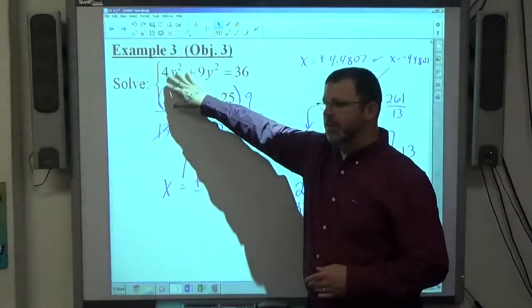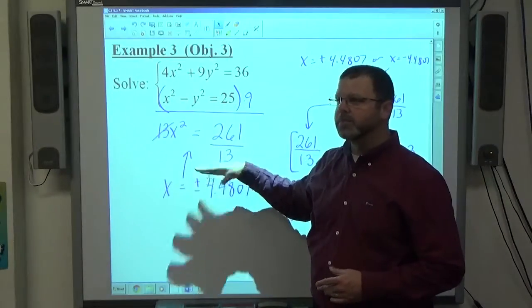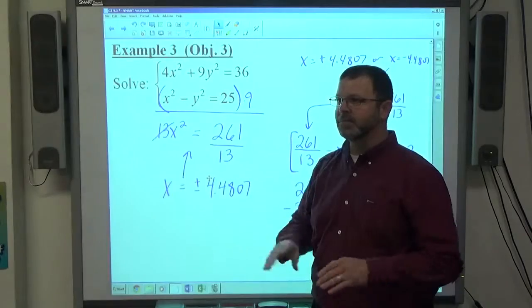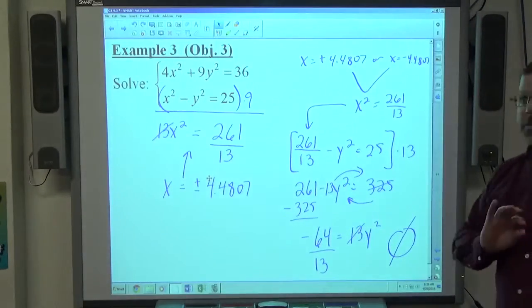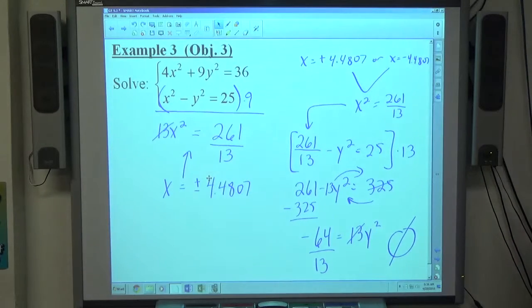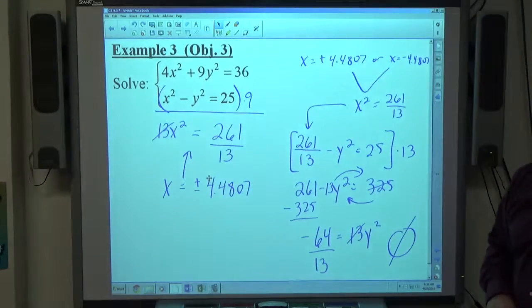If we had canceled x squared here and gotten y squared equals negative whatever, at that point we could immediately say it doesn't work. Right then, we wouldn't have to go through all this stuff. As soon as you hit a complex number, empty set it and move on to the next one. Thank you.